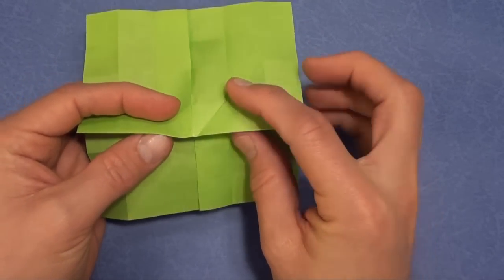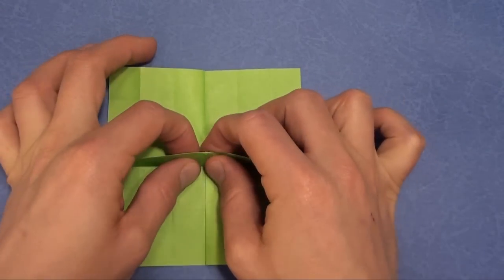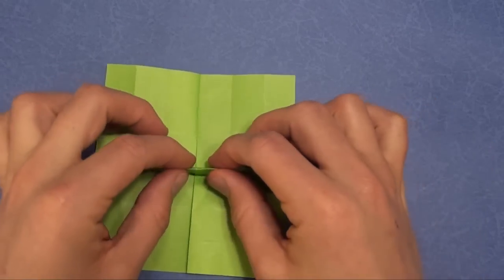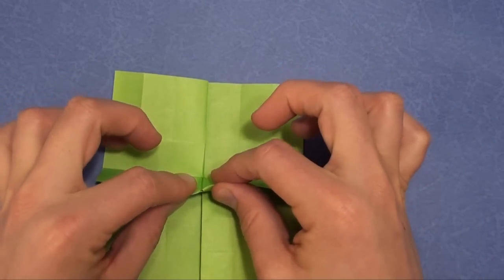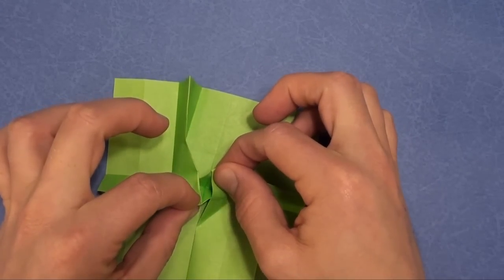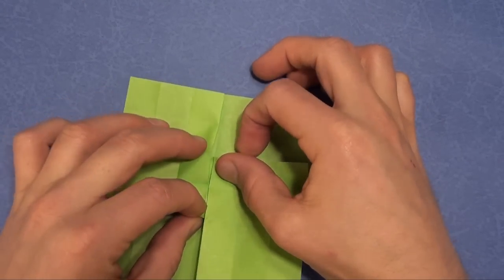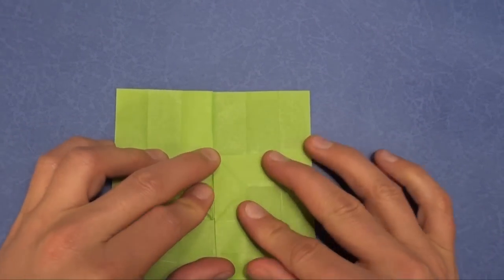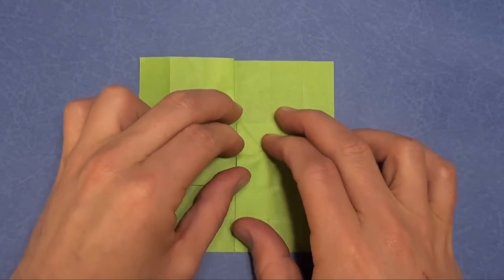And we're going to lift up this middle crease right here. Now we're going to separate these layers. Now there's really only one way to separate them. Okay. Separate and flatten. And there you have an iso area twist fold.